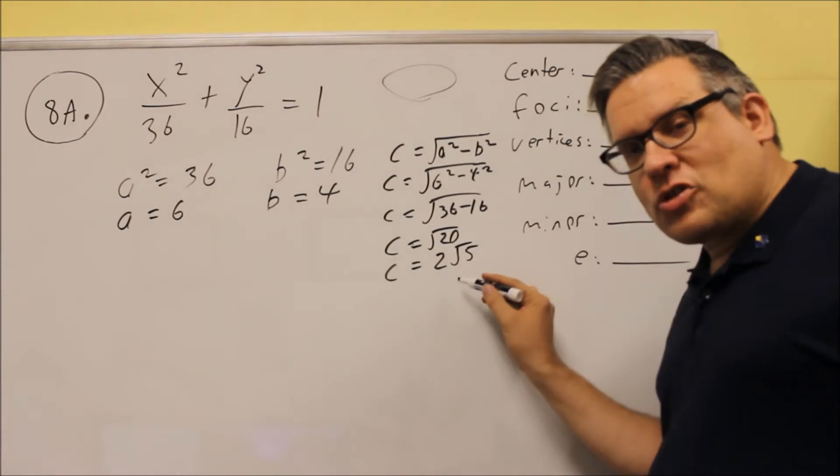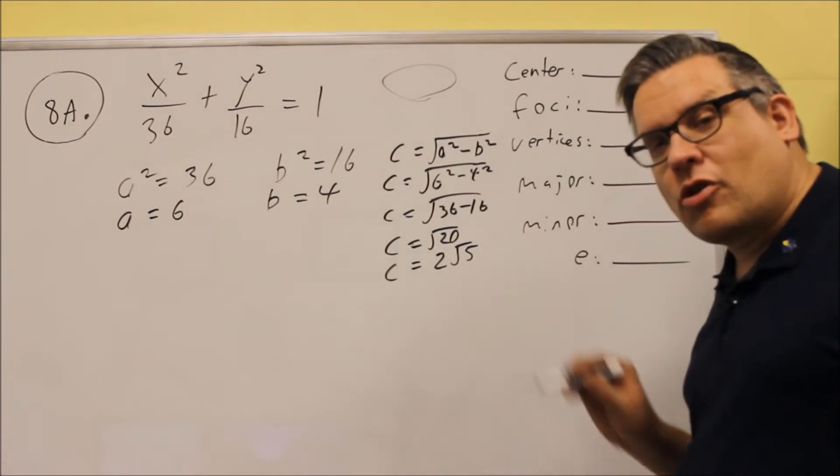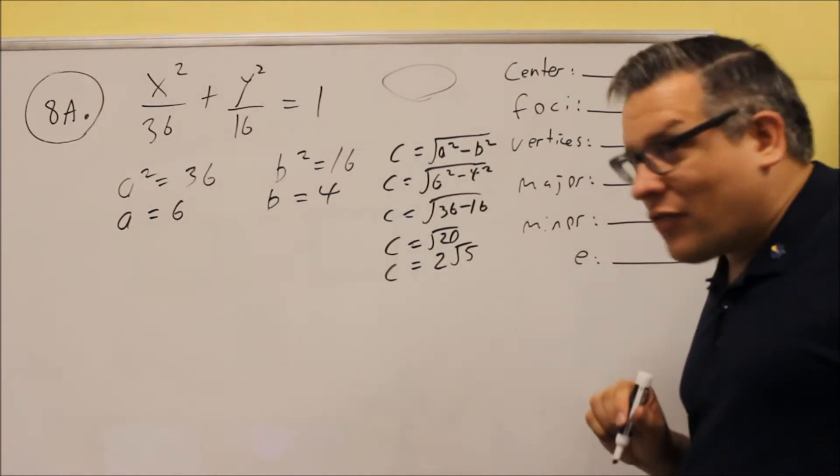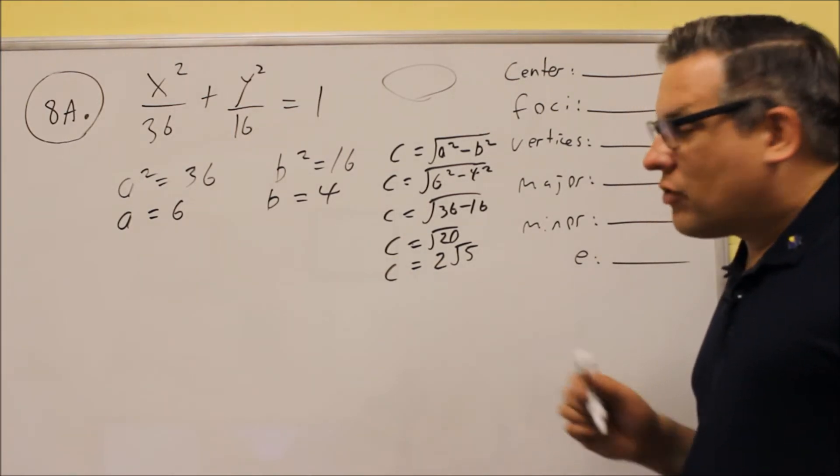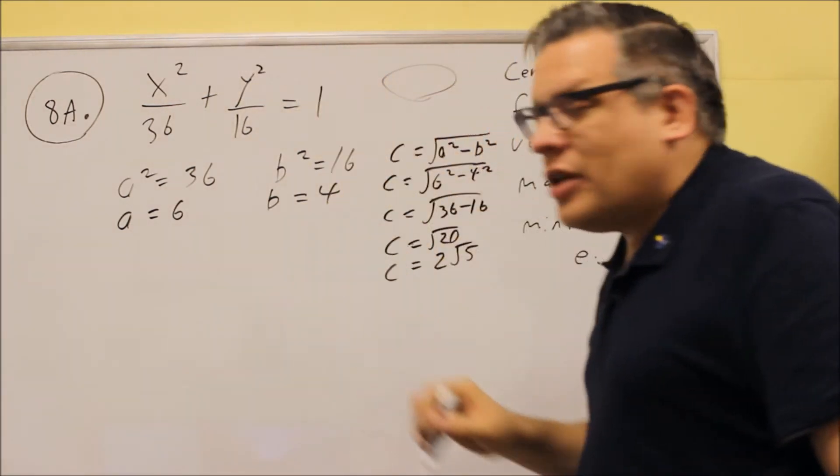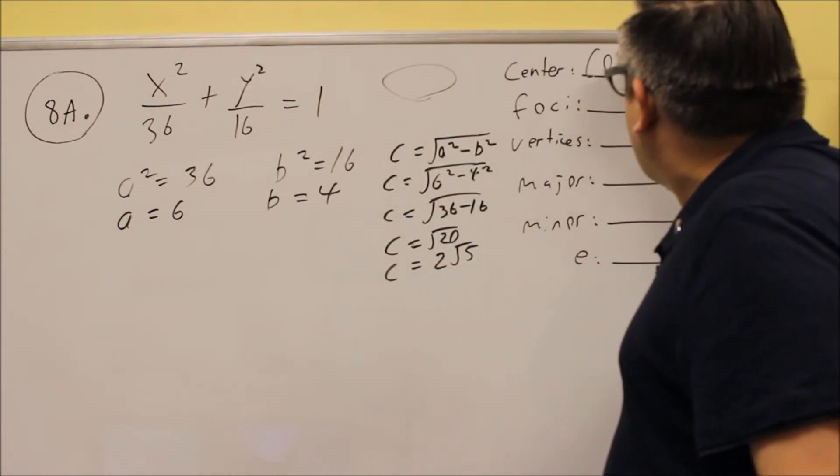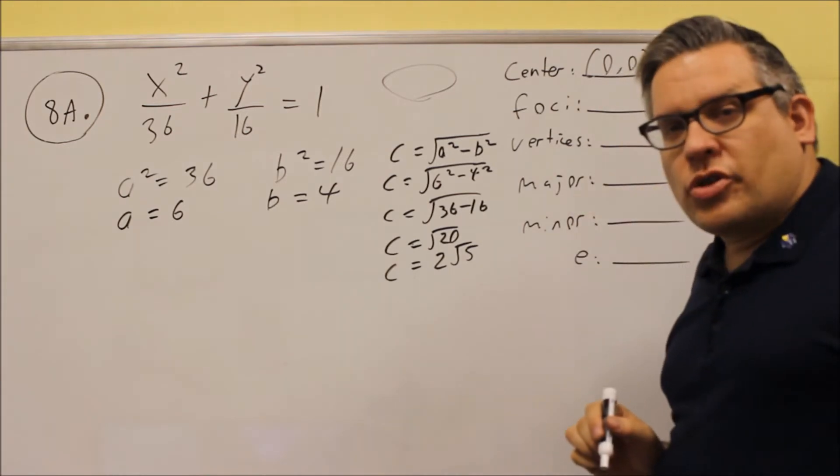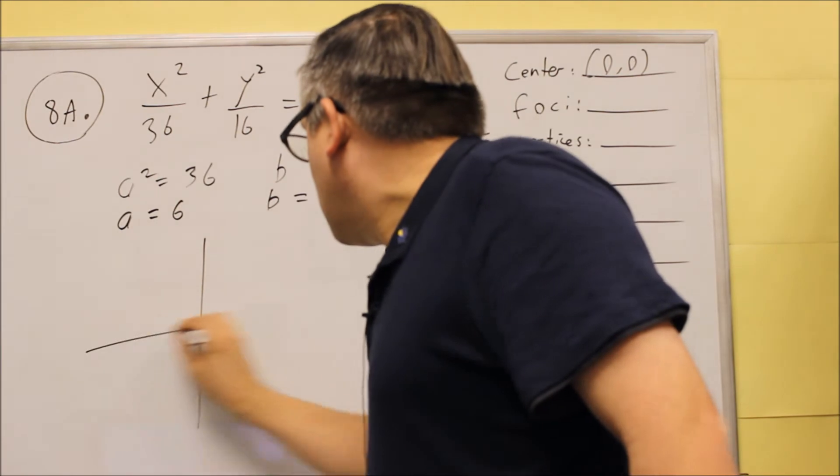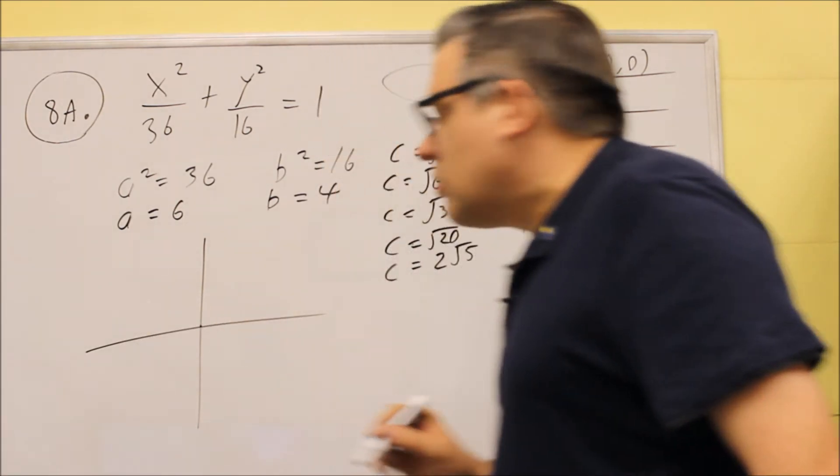So if you can break down the square root as much as possible, then you want to do that, 2 square root of 5. We have enough information to start graphing this. Now, first, we have to know where the center is. Now, notice there are no parentheses around the x and the y, and when we see that happening, we know that it's going to be centered at 0, 0.